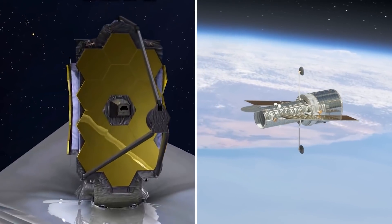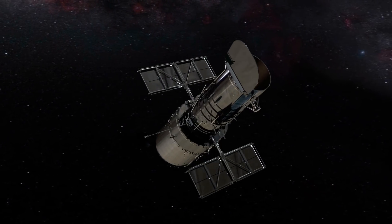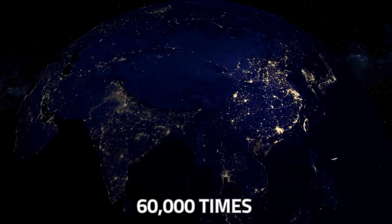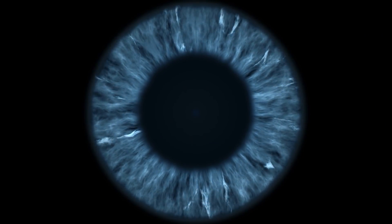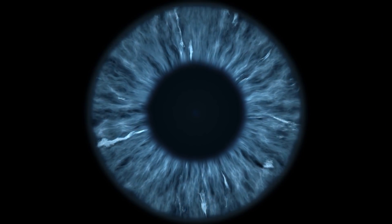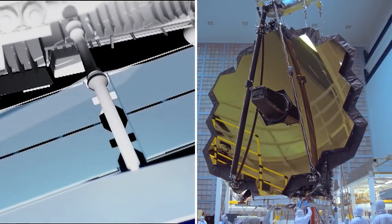If you compare the James Webb Telescope to the Hubble Telescope, you'll see that the Hubble Telescope was able to see things that were 60,000 times fainter to the human eye, due to its 2.4 meter aperture, but couldn't see beyond that. The James Webb Telescope has a mirror three times bigger than Hubble's.